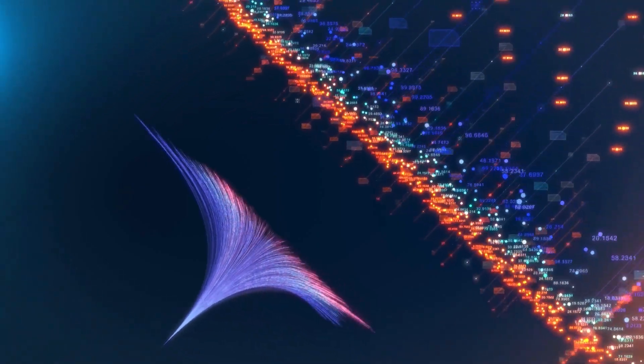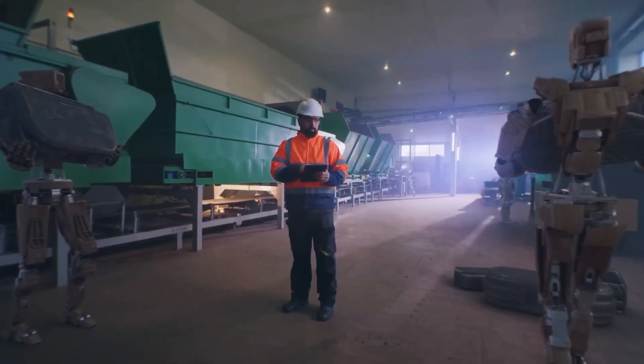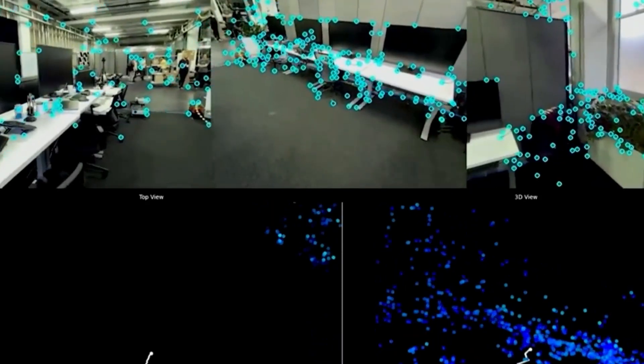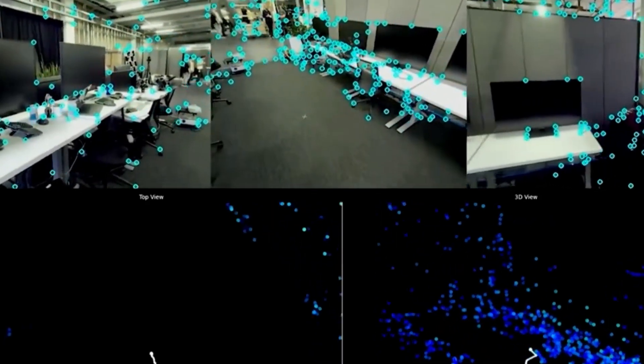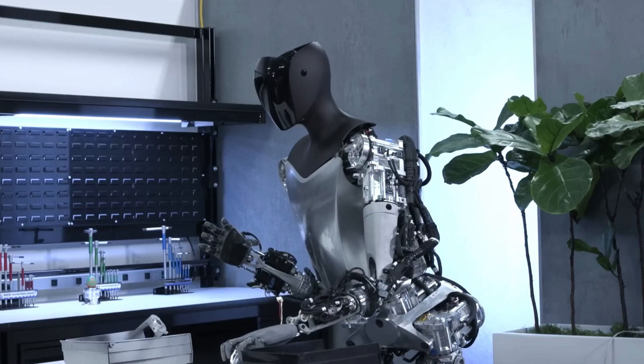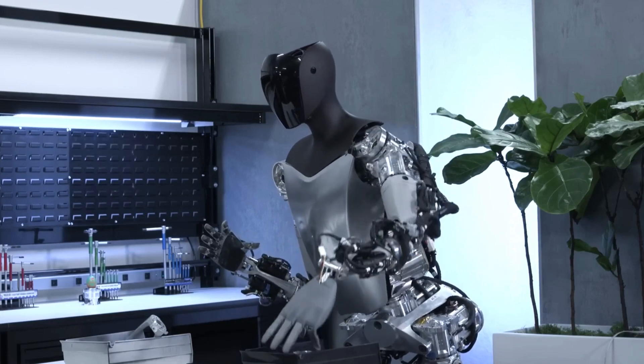The neural net can also handle dynamic changes in the environment, such as when a human intervenes and moves the objects around. The neural net can quickly adjust to the new situation and resume its task. It can also correct its errors, such as when an object lands on its side and needs to be rotated.